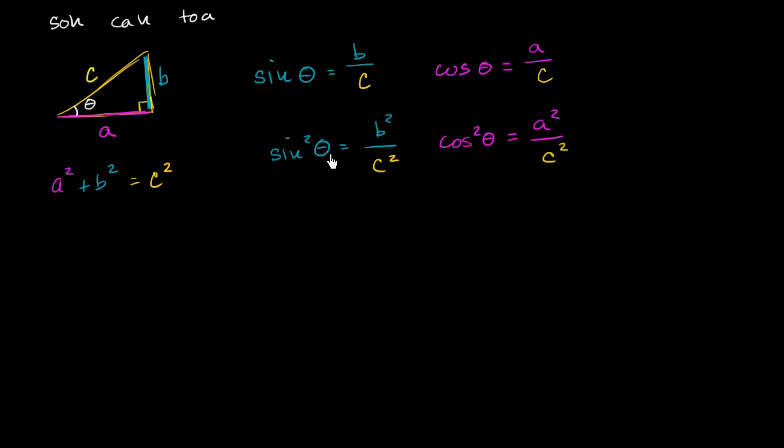So what's this sum? What's sine squared theta plus cosine squared theta? So sine squared theta plus cosine squared theta is going to be equal to what? Sine squared theta is b squared over c squared plus a squared over c squared. Which is going to be equal to, well we have a common denominator of c squared. And the numerator we have b squared plus a squared.